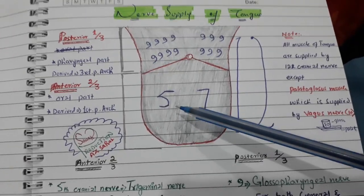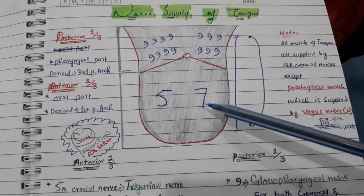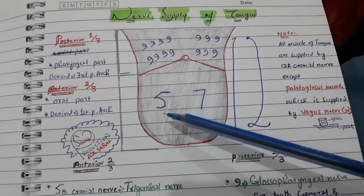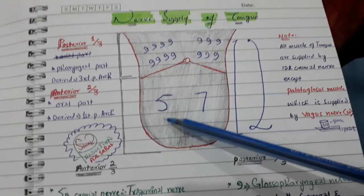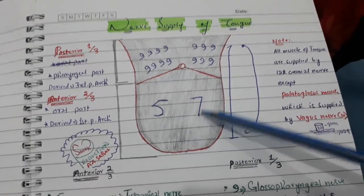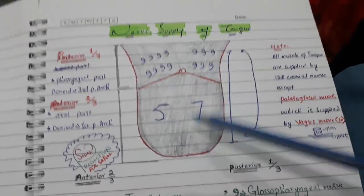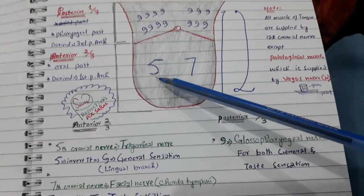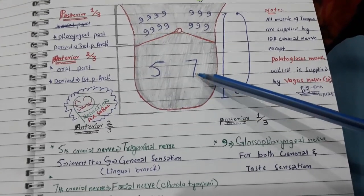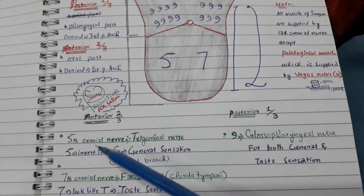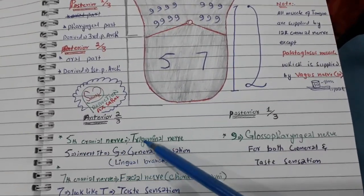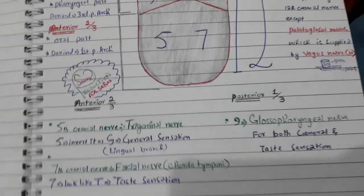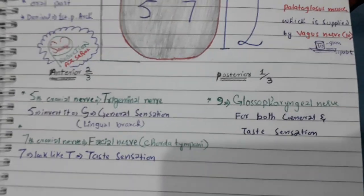The anterior two-thirds is going to be supplied by the fifth and seventh cranial nerves. To remember this, just note the odd numbers: five, seven, and nine. So the anterior two-thirds is supplied by the fifth cranial nerve and the seventh cranial nerve.